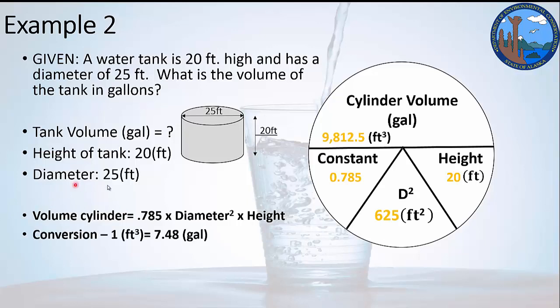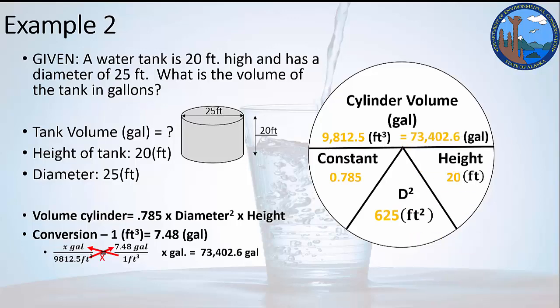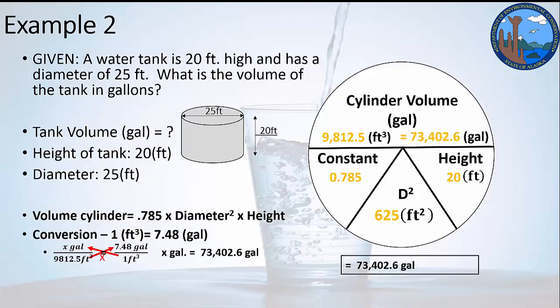The challenge here is they ask for gallons rather than feet cubed, so we have to do a little conversion. Again, you can find that on your formula sheets. You go to the conversion, set up a ratio, and you can cross multiply with that ratio because 7.48 gallons equals 1 foot cubed. We don't know the number of gallons that equals 9,812.5 feet cubed. So if we cross multiply, we should get our gallons of 73,402.6 gallons. And that's the final answer for the cylinder question.